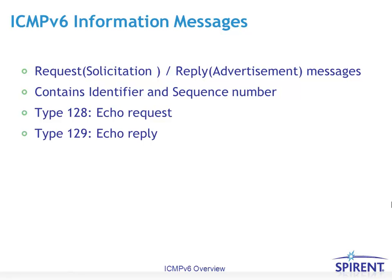ICMPv6 informational messages take various forms. They can be request or solicitation type messages, or reply or advertisement type messages. They contain an identifier and a sequence number to distinguish them. The ping function — echo request and echo reply — has specific type values of 128 and 129 respectively.